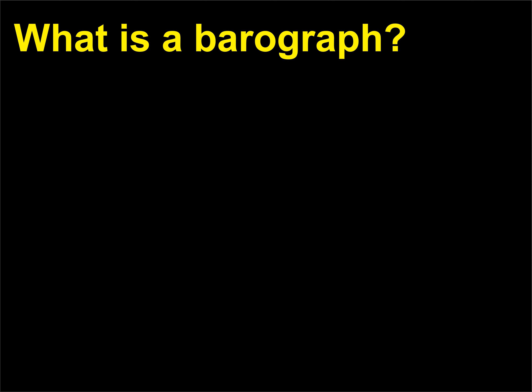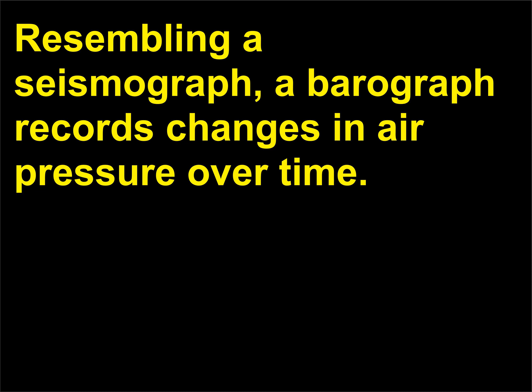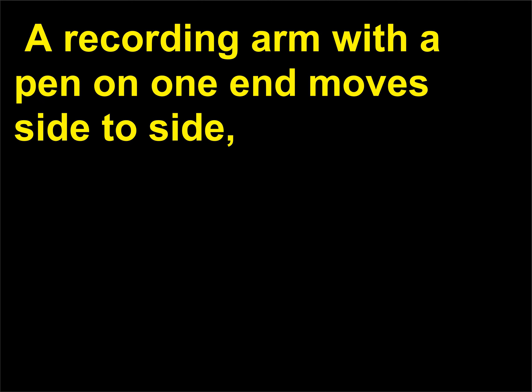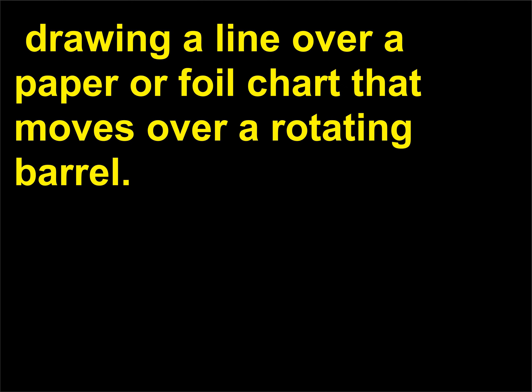What is a barograph? Resembling a seismograph, a barograph records changes in air pressure over time. A recording arm with a pen on one end moves side to side, drawing a line over a paper or foil chart that moves over a rotating barrel.